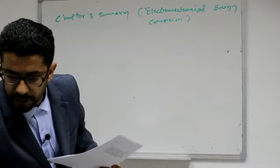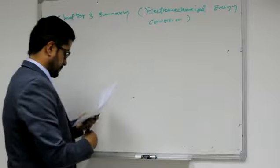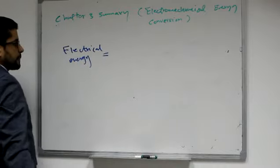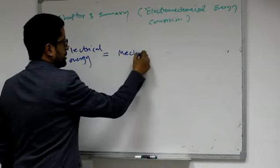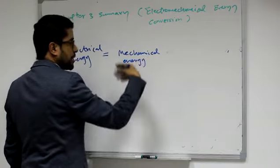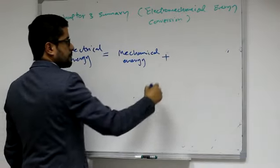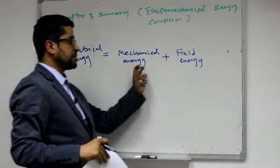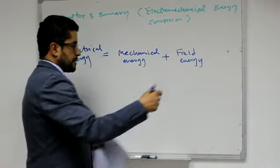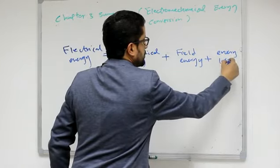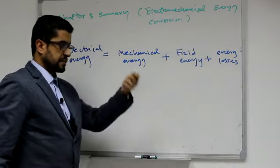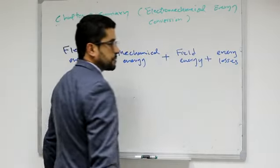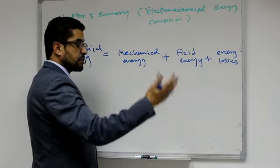We have the following important equation for this chapter: electrical energy can be translated to mechanical energy by motors or actuators, plus field energy — because we cannot create mechanical energy without the existence of field energy — plus energy losses. The electrical energy invested in this mechanical device will produce mechanical energy, some stored as field energy, and the rest dissipated as energy losses: heat energy, core losses, and copper losses.